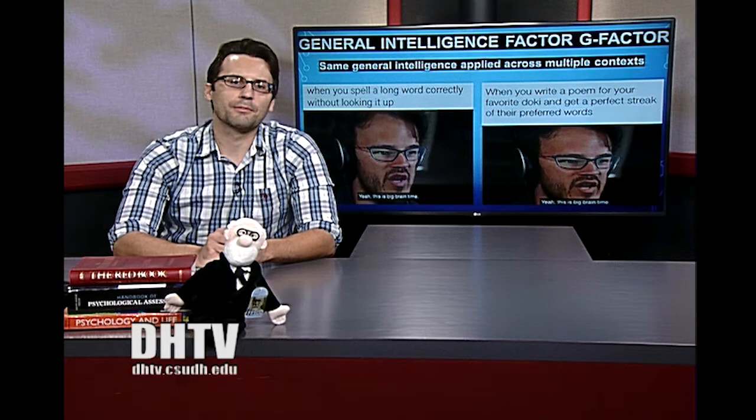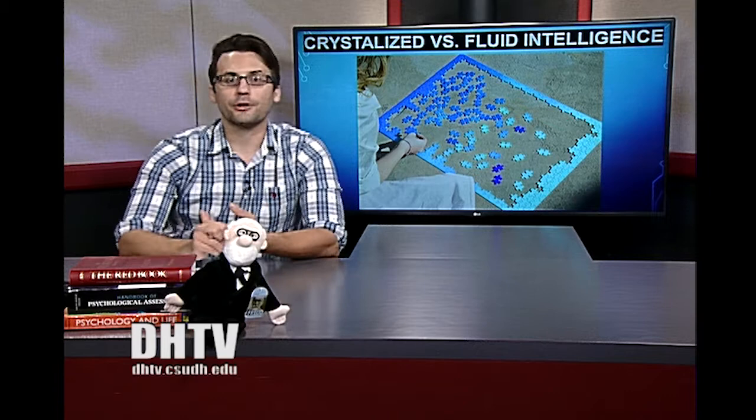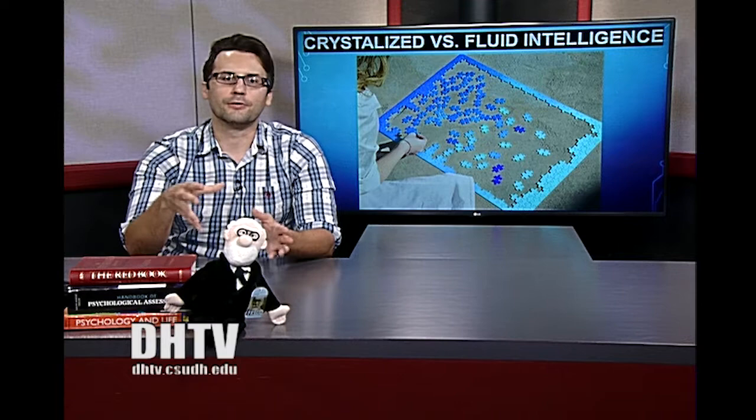The next theory came from Raymond Cattell, who proposed that intelligence is not just one thing but two different things: crystallized intelligence and fluid intelligence. Crystallized intelligence is like your database — facts, figures, and what you remember. Fluid intelligence is your ability to solve new problems.